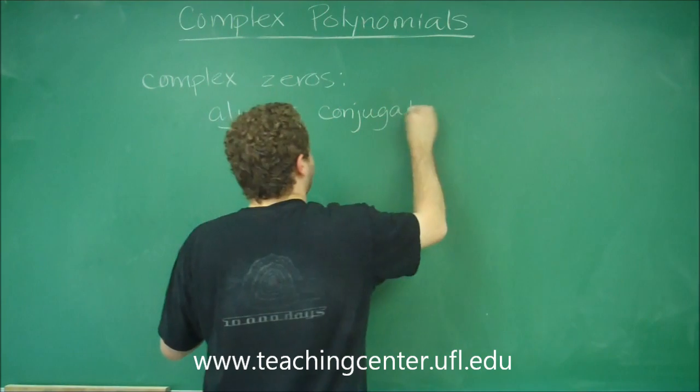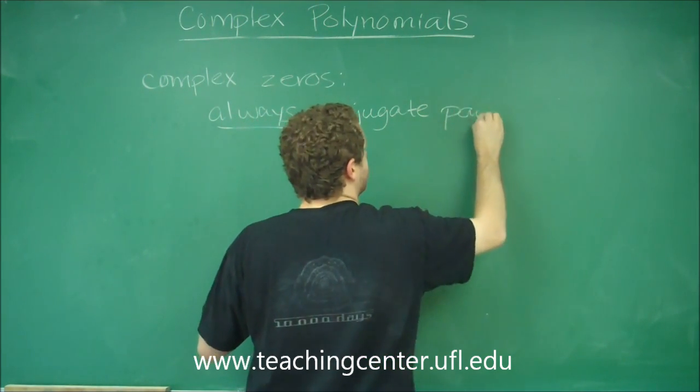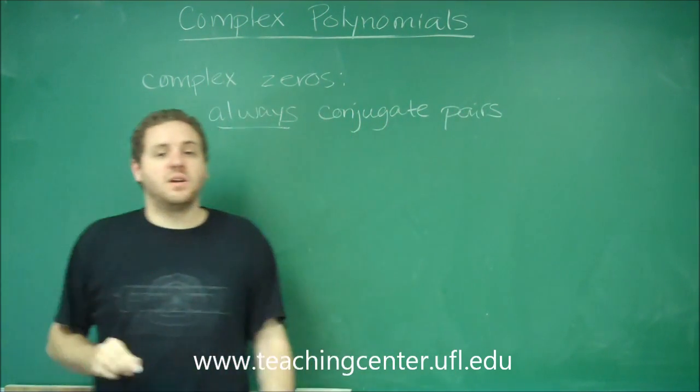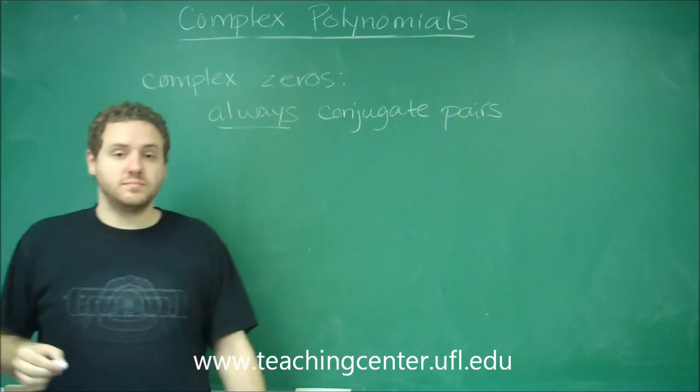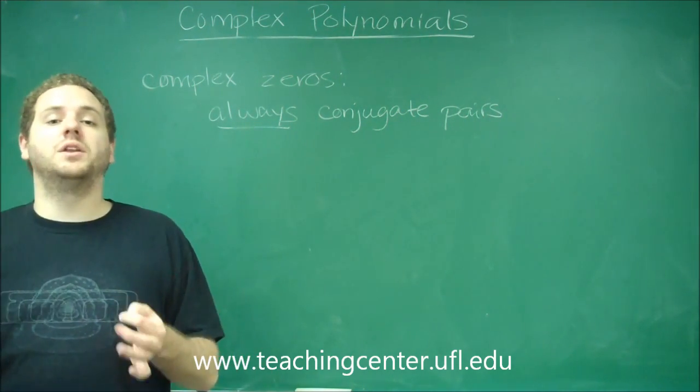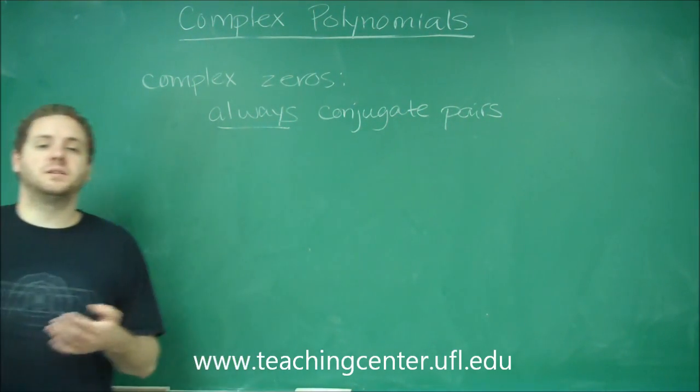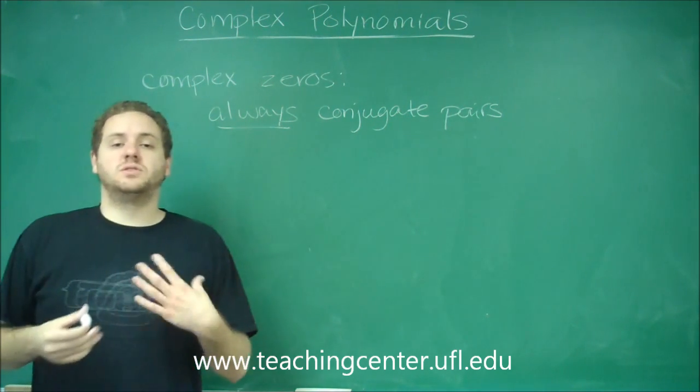What that tells you, and by conjugate of course I'm talking about the complex conjugate, so you can never have an odd number of complex roots because you always have to have the conjugate.